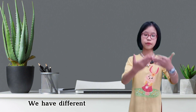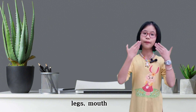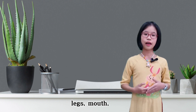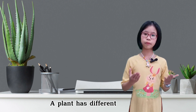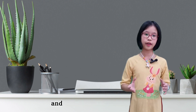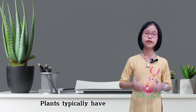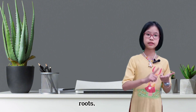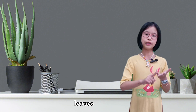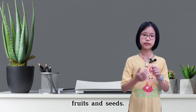We have different body parts such as arms, legs, mouth, etc. A plant has different parts too and they all do different jobs. Plants typically have six basic parts: roots, stems, leaves, flowers, fruits, and seeds.